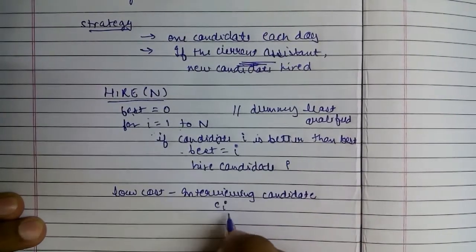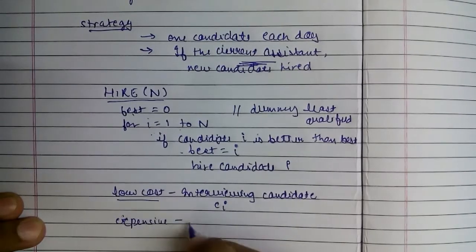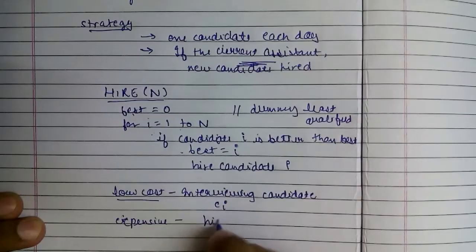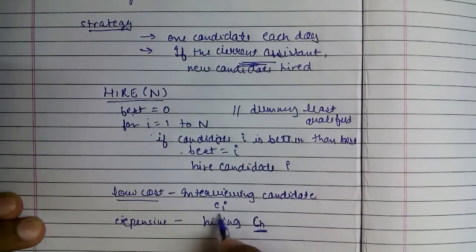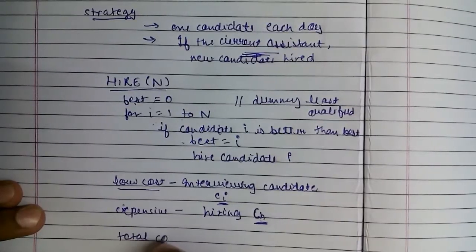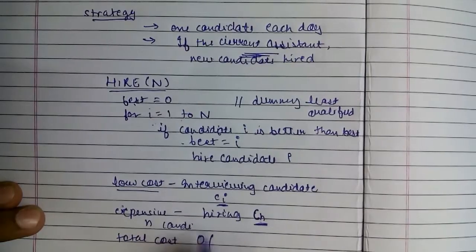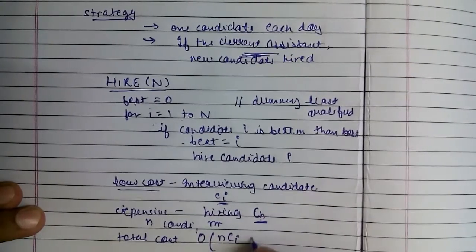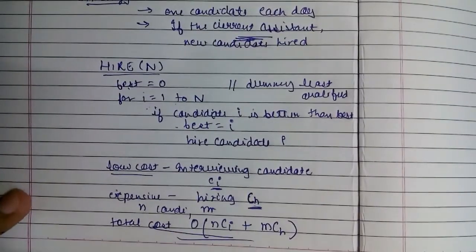The low cost is interviewing a candidate — let's call it CI. The expensive one will be hiring, because we will have to pay the current assistant some money and also pay the agency. So the hiring cost will be CH. The total cost is: N into CI, because we interview all N candidates, plus M into CH, where M is the number of candidates we actually hire.